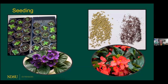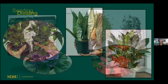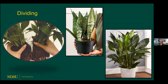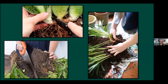Starting from seed is probably not as common as other methods. One of the easiest ways to get more houseplants is dividing — simply taking the plant out of its pot and splitting it into sections. Certain types of plants lend themselves well to dividing, such as the snake plant and the peace lily. Their leaves and stems all come from a lower central crown, which makes them ideal for splitting apart.